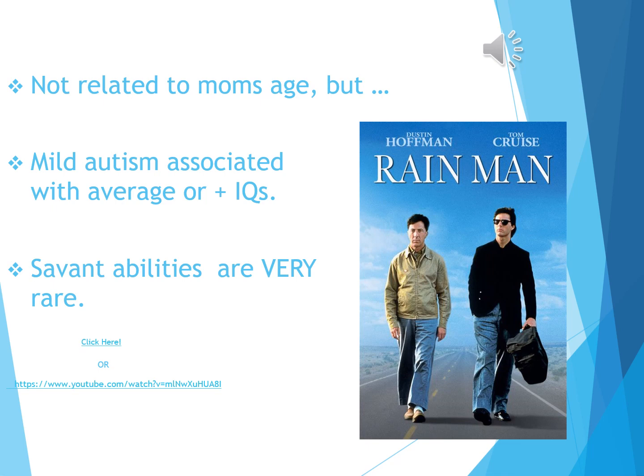Savant abilities are very rare. The movie Rain Man, starring Dustin Hoffman and Tom Cruise, is based on a real individual who was severely autistic and unable to care for himself, yet gifted in many areas — he could memorize parts of the phone book and instantly count a pile of dropped toothpicks. Most people think all strongly autistic people are savants, but in fact it's very rare even within the autistic community.